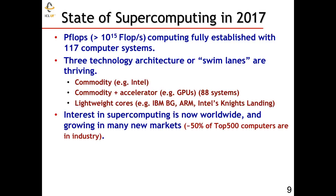There's interest in supercomputing worldwide and it's growing in many markets. If we take a look at the list of the 500 fastest computers today, about half of those computers are used in industry. Industry gets it — these machines provide a strategic advantage for their products and their company, and provide a way to effectively understand things better than they could with other mechanisms.